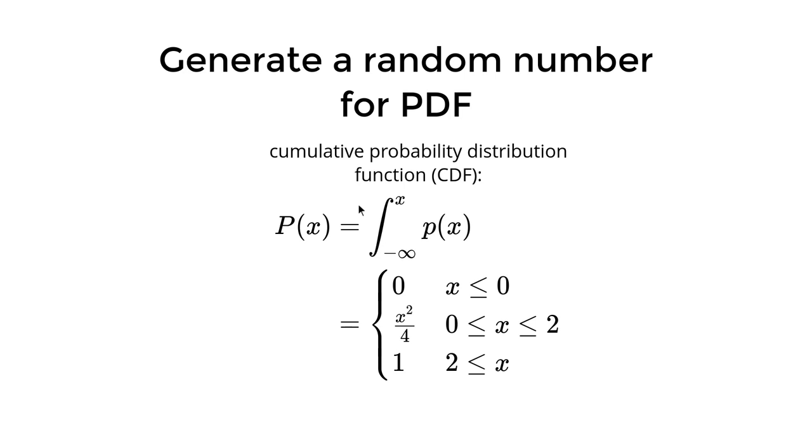But the next topic is how do we generate a random number with probability density function. For that, we need a cumulative probability distribution function, which we sometimes call CDF. We denote it as uppercase P(x). The CDF is cumulative probability of the probability density. It's the probability density from negative infinity to some point x. Obviously, because we haven't defined probability density functions for x less than 0, our CDF when x less than 0 is just 0.